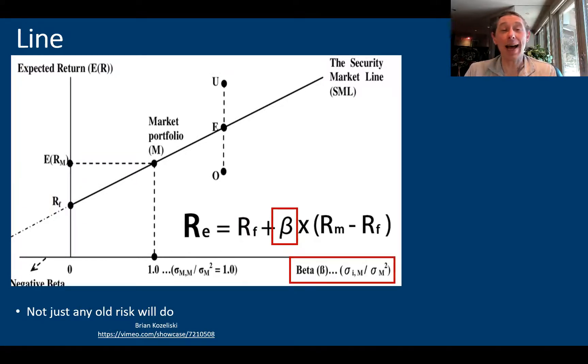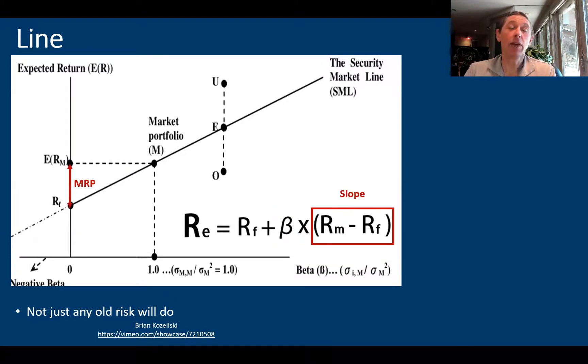You will see that beta is the term for the x-axis. And you'll see here that this quantity, the expected return for the market minus the risk-free rate is the market risk premium. It also determines the slope of this line.